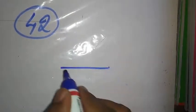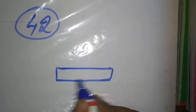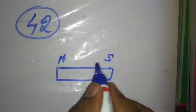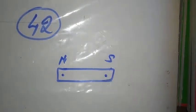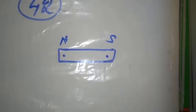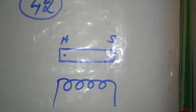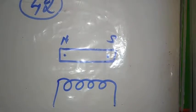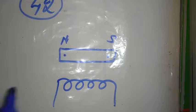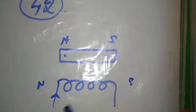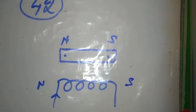One current carrying solenoid is equivalent to the bar magnet. This is the north pole, this is the south pole. The bar magnet is equivalent to the north pole and south pole. Hence the correct answer for question number 42 is the third option.